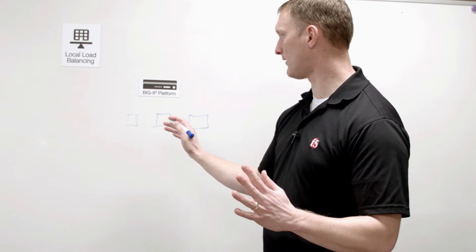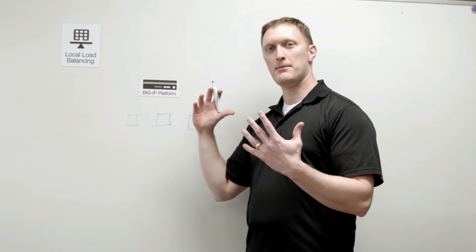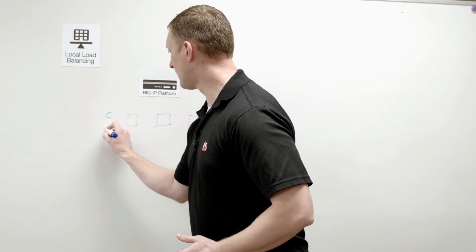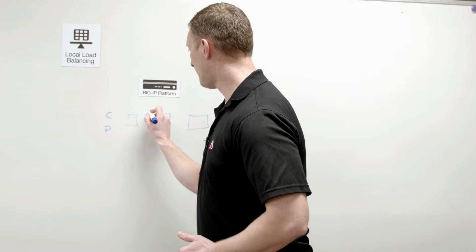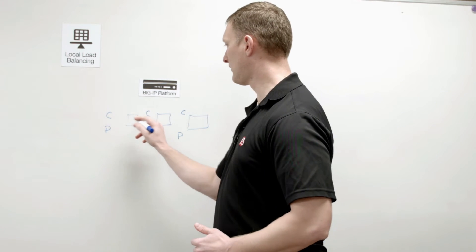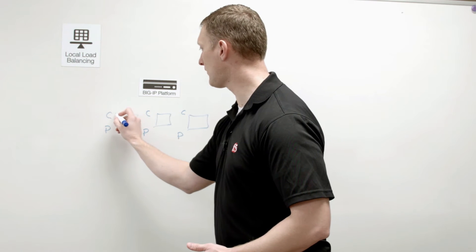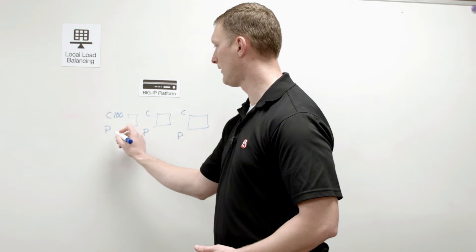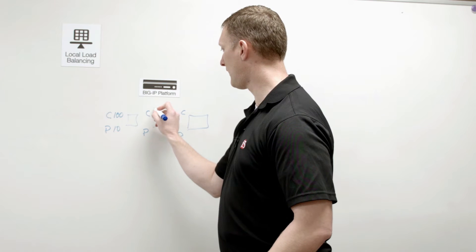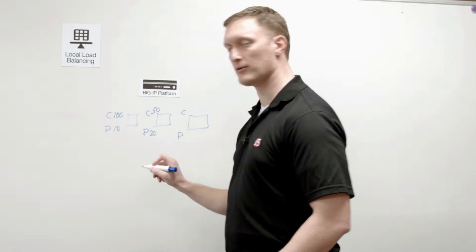As a quick example, the BIG-IP is going to keep a connection table and a persistence table for each of these back-end servers. I'm going to put a C and a P for each of them, and then we're going to look at how many connections each one has and what the persistence record count is. For this one, let's say it has 100 connections but only 10 of them are persisted. This one has 50 connections and 20 of them are persisted.